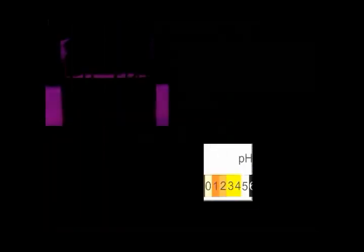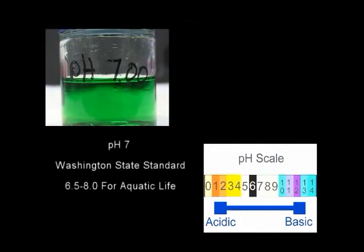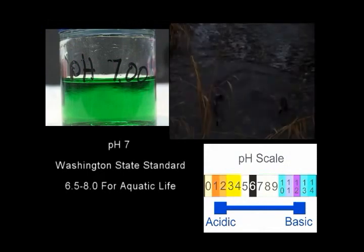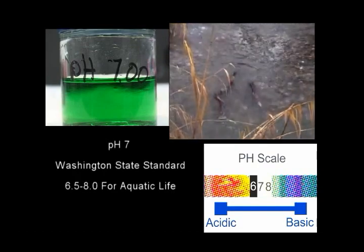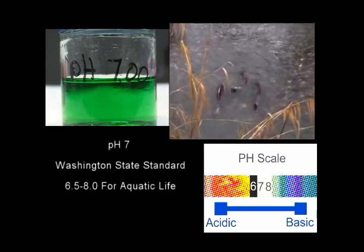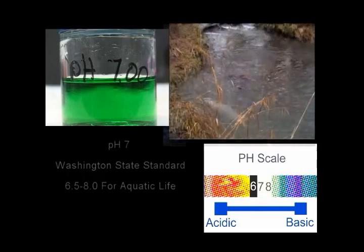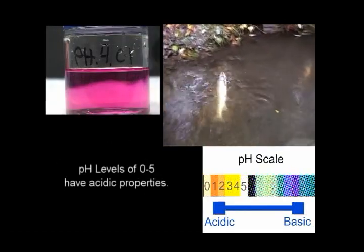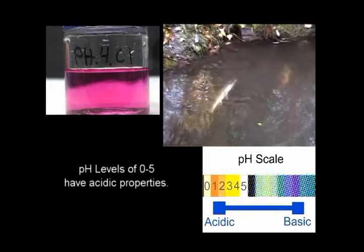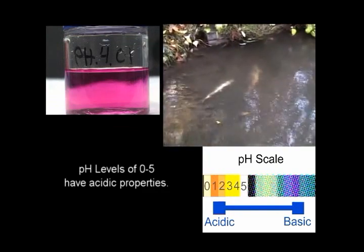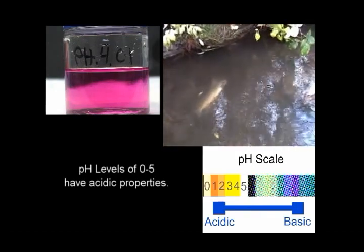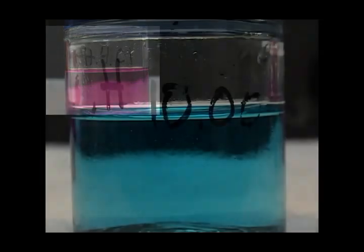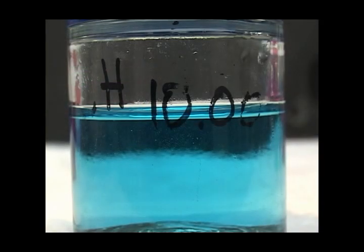pH affects many chemical and biological processes in the water. Most freshwater aquatic animals prefer a pH in the range of 6.5 to 8.0. Outside this range reduces the diversity in the stream because it stresses the physiological systems of most organisms and can reduce their reproduction. Low pH can also allow toxic elements and compounds to be mobilized and taken in by aquatic plants and animals. Low or high pH can be toxic to aquatic life, particularly to sensitive species such as salmon. For example, a pH over ten can kill a salmon in minutes.